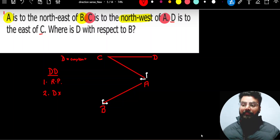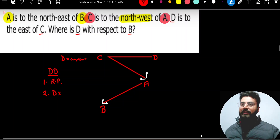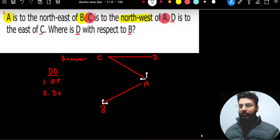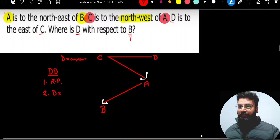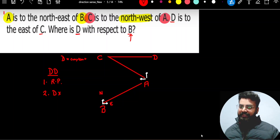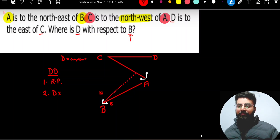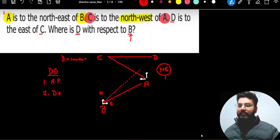More diagrams can be created, but let us try answering this question first: where is D with respect to point B? B is going to be the reference — let's stand at B. From B, looking at D: this is the north of B, this is the east of B. Point D is not exactly in the north nor exactly in the east of it — it is somewhere in between. So the answer to this question as per my first diagram is north-east.